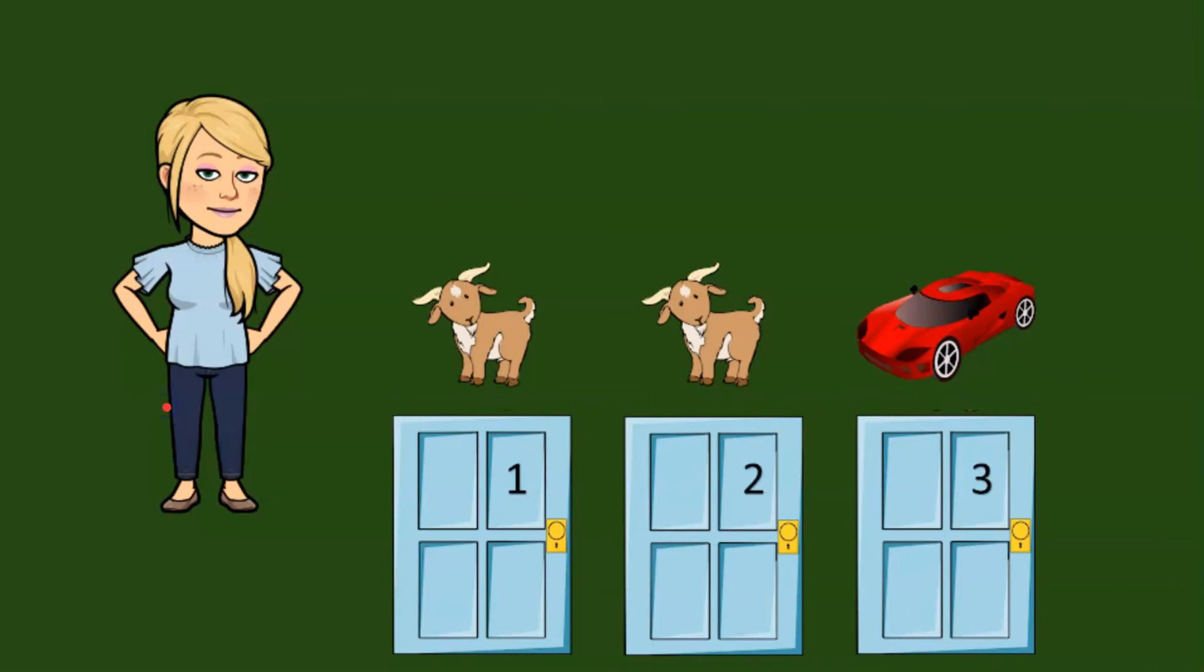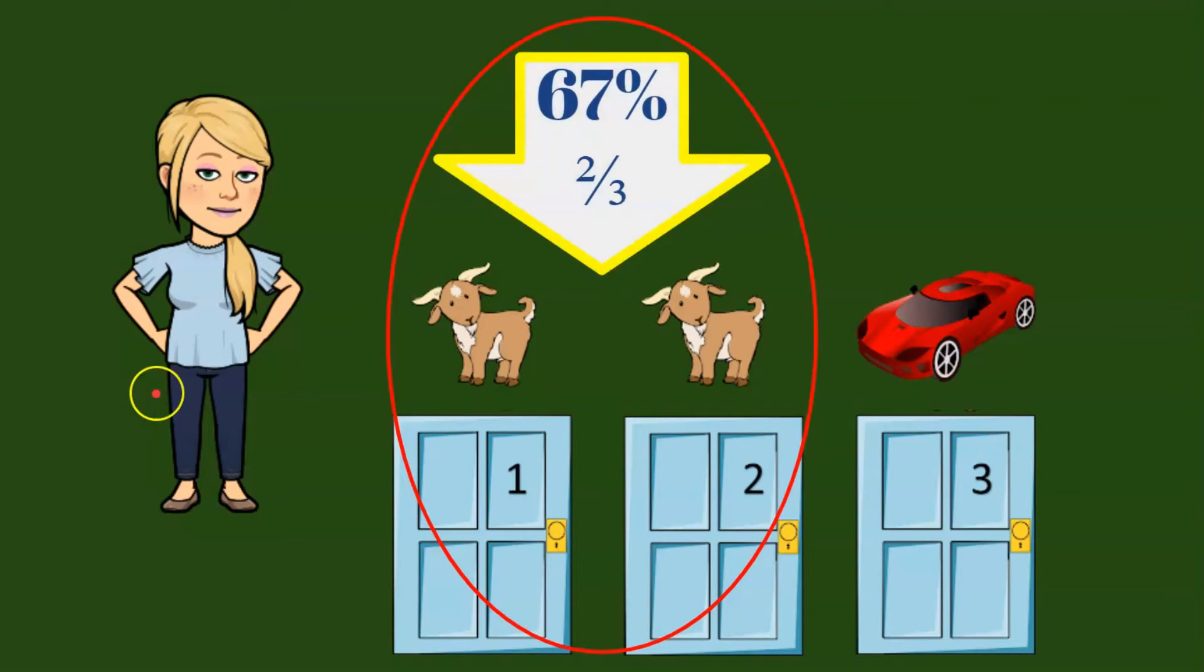So now let's go through this probability model. We had behind doors number one and two, each had a goat, and door number three had the car. So I had three choices and two out of my three choices were goats. So I had a 67% chance or two out of three chance of selecting a door with a goat.